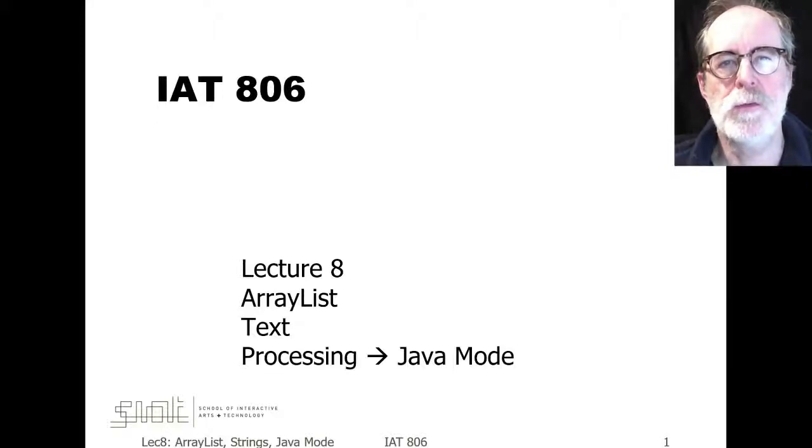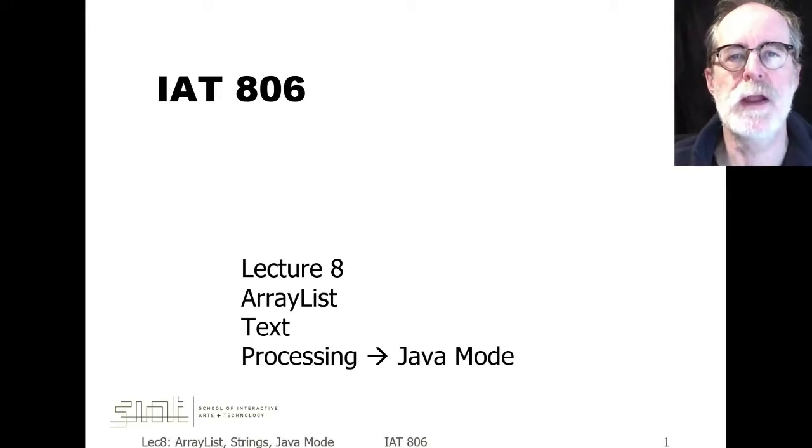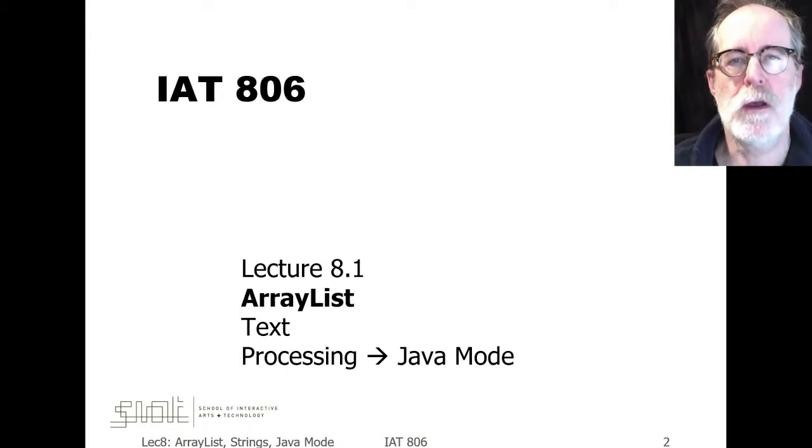This is IET 806, Lecture 8, where we're going to be talking about a small variety of topics in this segment. First, we'll talk about ArrayList, then we'll talk about Text, and then finally we'll talk about Processing's Java Mode, where we can make the transition from writing exclusively within the processing system and the simplified mode of Java that it presents to you, to the more complex full Java Mode where you have to do all the work of specifying a full Java program but you have access to all of Java's capabilities. So let's get started now in this segment 8.1 where we're talking about ArrayList.